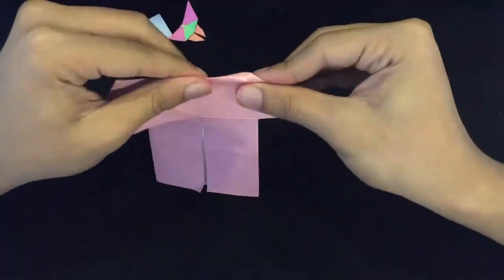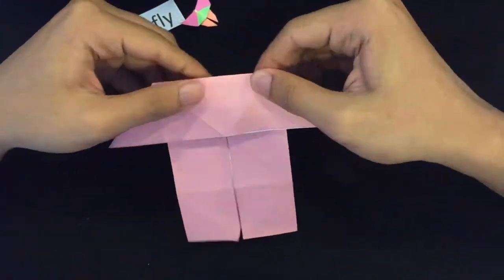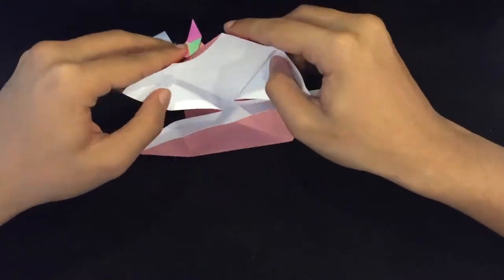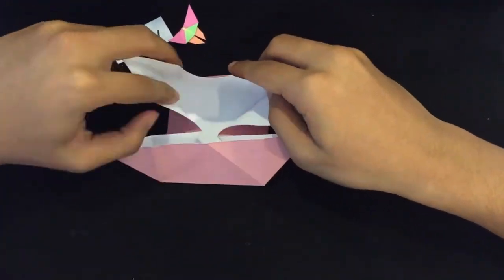Pull down the flap downward to form a trapezoid. Then you repeat from the bottom flap to form another trapezoid.